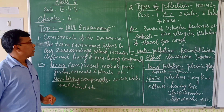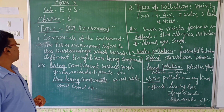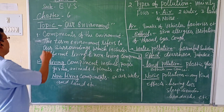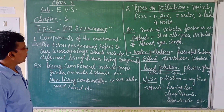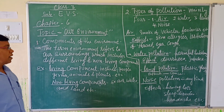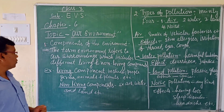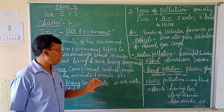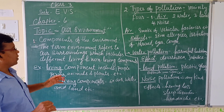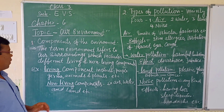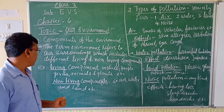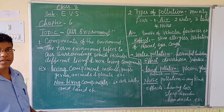Here we will see two types of components in the environment. First, let us know about the environment. The term environment refers to our surroundings which includes different living and non-living components. Living components include people, germs, animals, and plants.